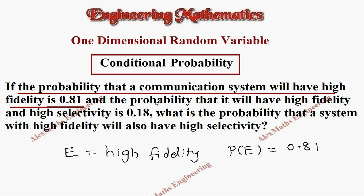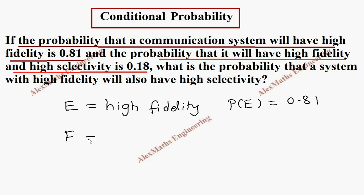And then the probability that it will have high fidelity and high selectivity is 0.18. Let's take F which is high selectivity. Now as per the question, they say high fidelity and high selectivity, it means the intersection of high fidelity and high selectivity. So it is P of E intersection F, which has probability value 0.18.